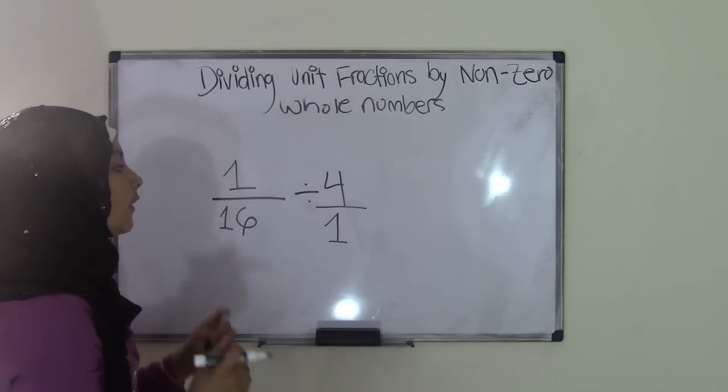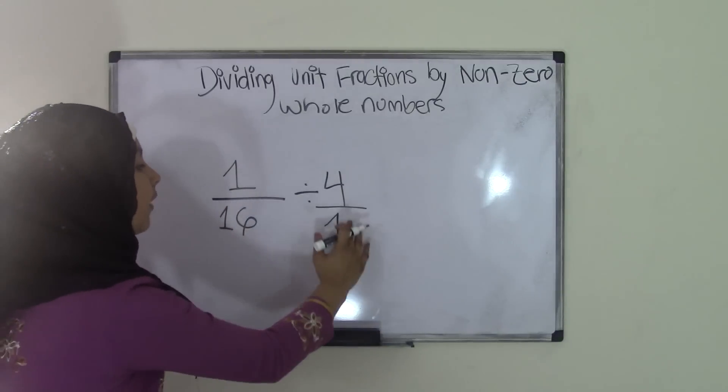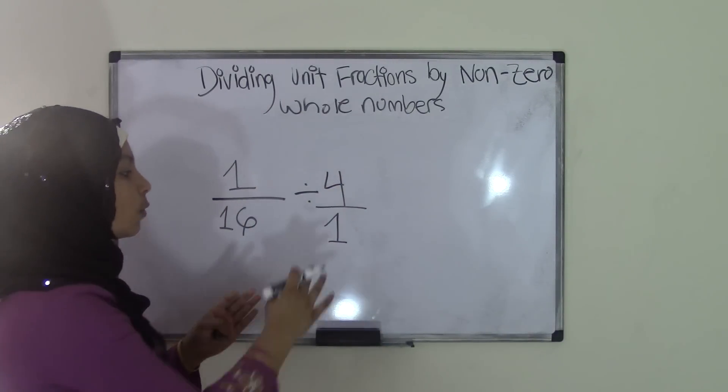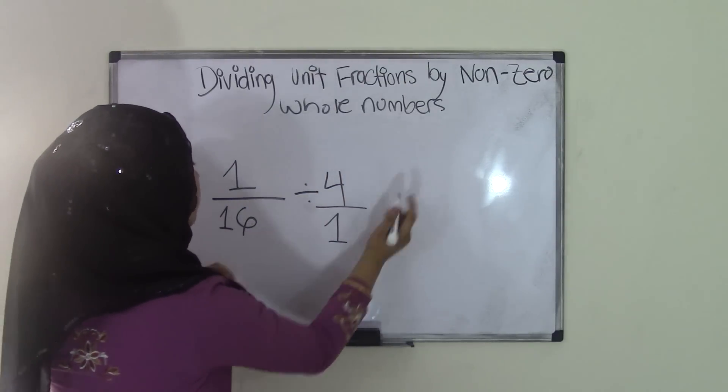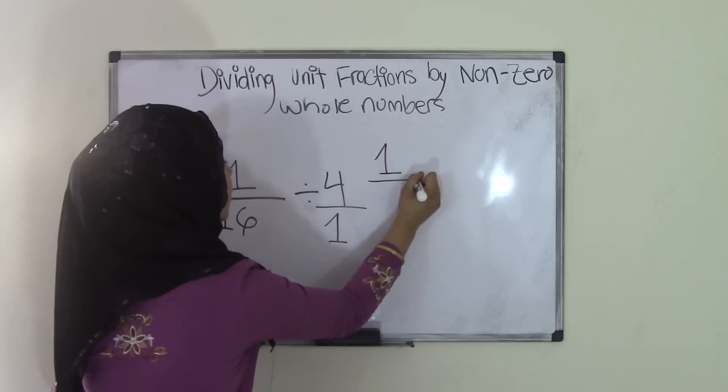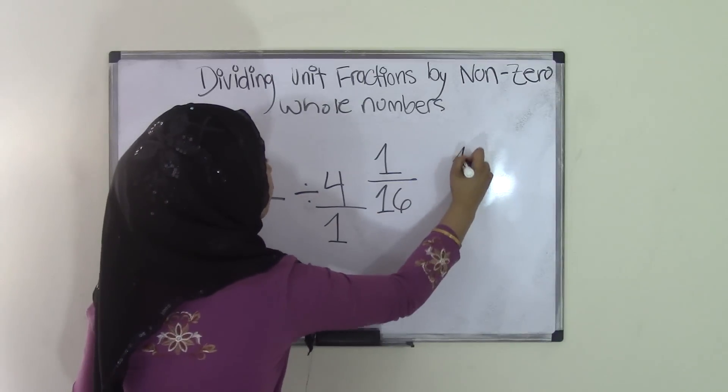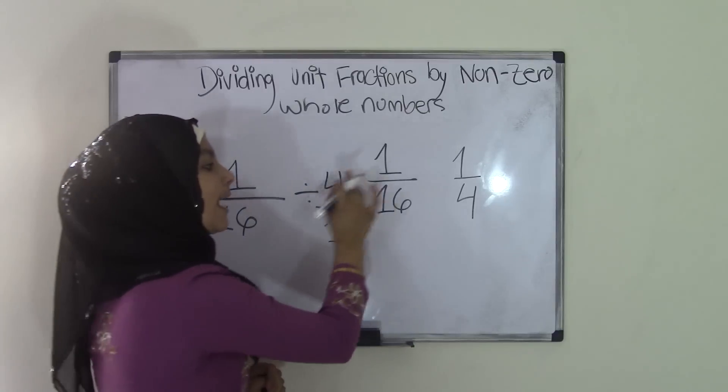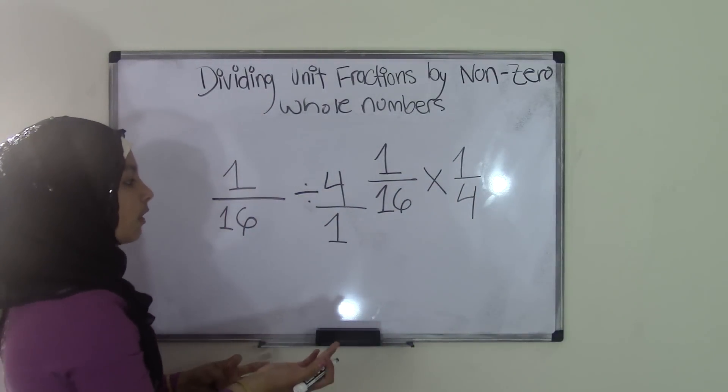What is the reciprocal method? The reciprocal method is just you have to take your second fraction, which is 4 over 1, you switch it so that it becomes 1 over 4. So the reciprocal for 1 over 16 divided by 4 over 1 would be, so 1 over 16 stays the same, and you make your 4 over 1 a 1 over 4, but the division sign now becomes a multiplication sign.